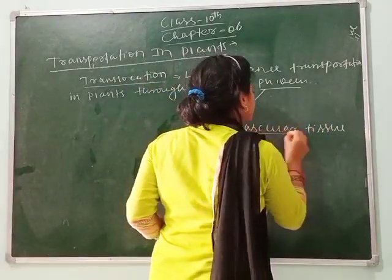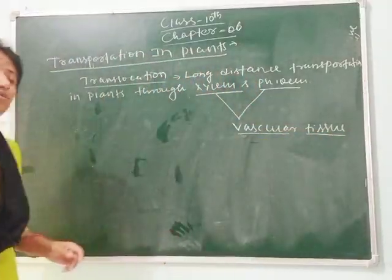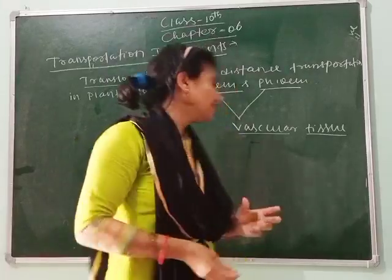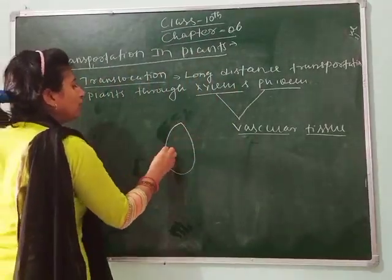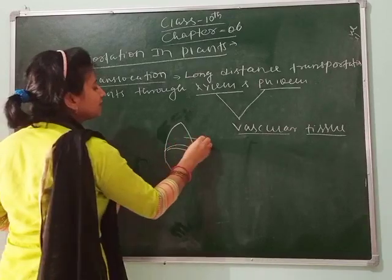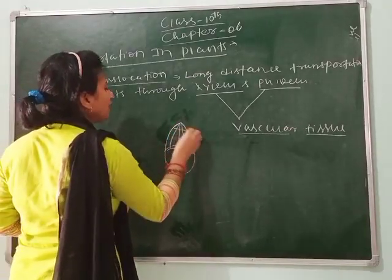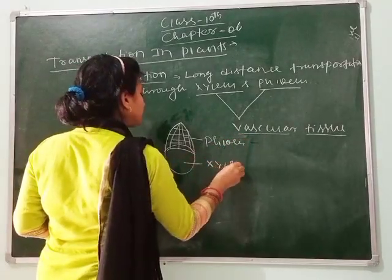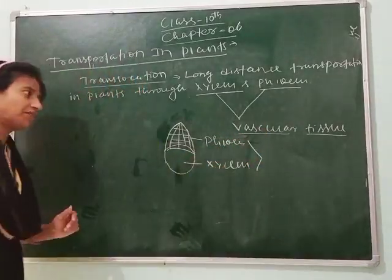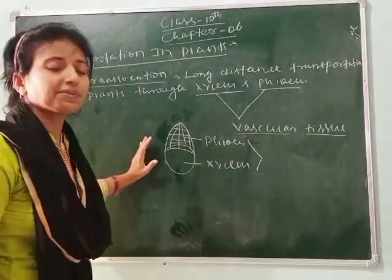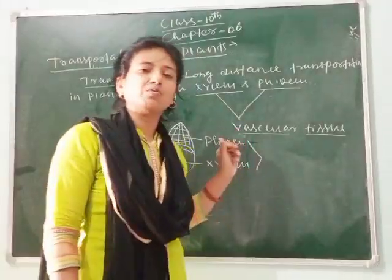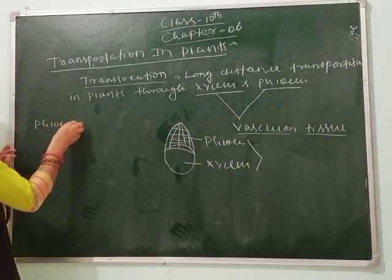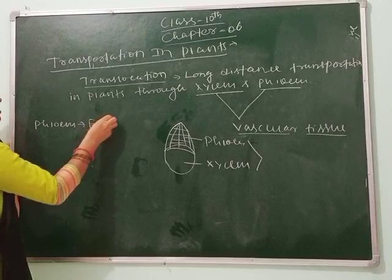Xylem and phloem together are called vascular tissue. They are called vascular tissue because they are combined with the help of cambium. Xylem and phloem look like this — the upper part is phloem and below is xylem — and together they form the vascular tissue.